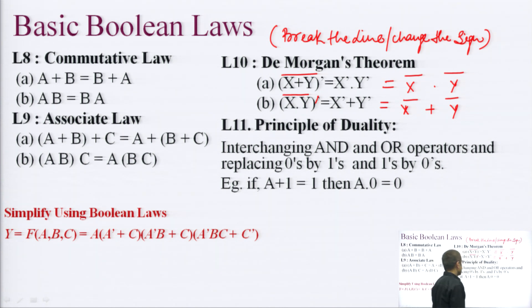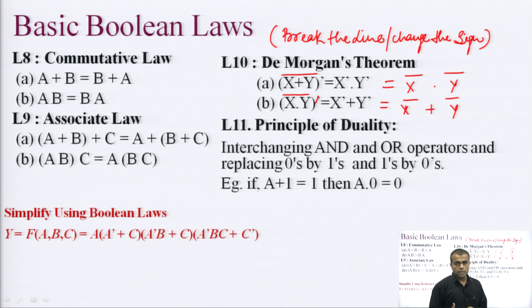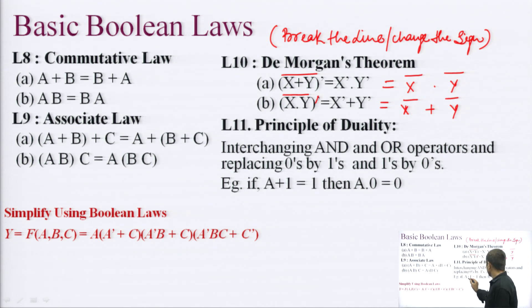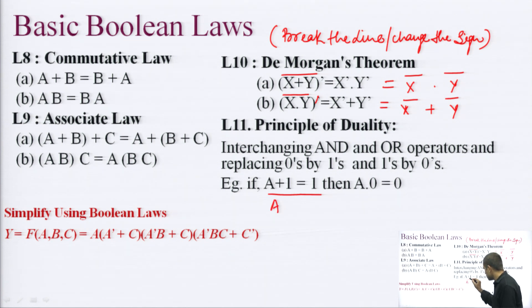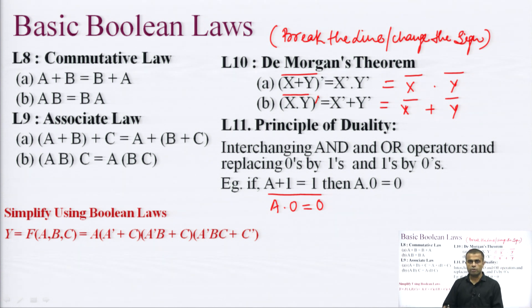The principle of duality states that we can interchange AND and OR operators and replace 0 by 1 and 1 by 0. If a property still holds after this interchange, the expression is called a dual expression. For example, if A plus 1 equals 1, replacing plus with dot and 1 with 0 gives A dot 0 equals 0, which is also perfectly valid — confirming it is a dual expression.